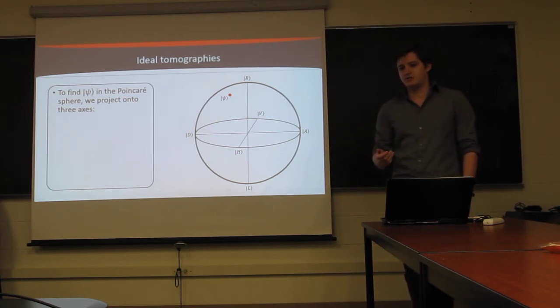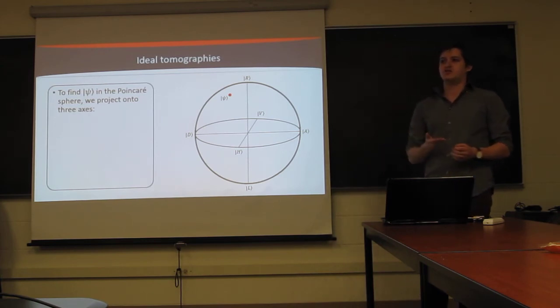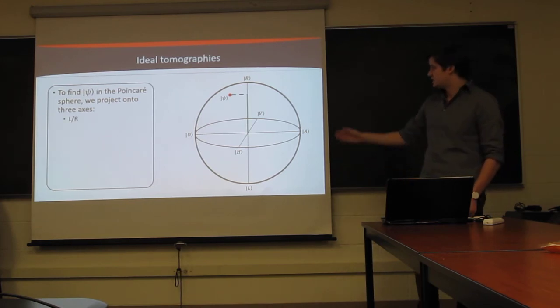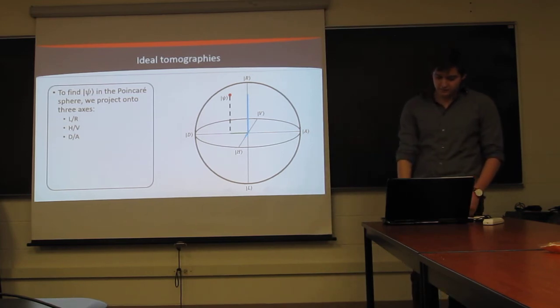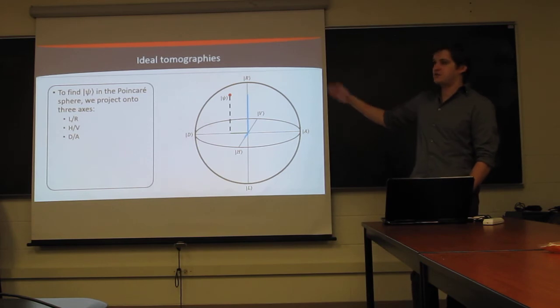So, to do that, much like you could in any coordinate system, we want to project it onto the different axes of our Poincare sphere. So, we can measure a projection, see where it lies on the LR axis, where it lies on the HV axis, and where it lies on the DA axis. And, once we have that, we have a uniquely determined point, and we have our state.